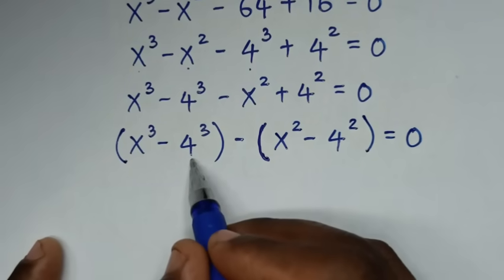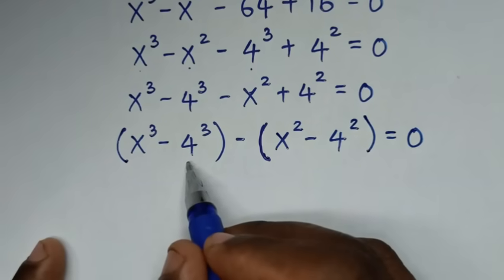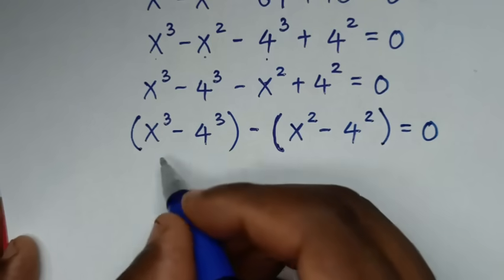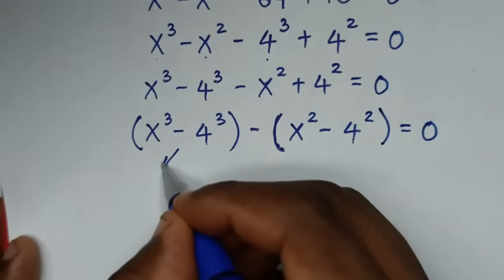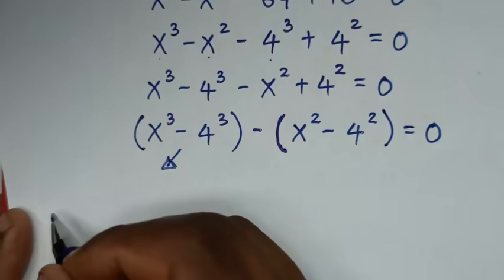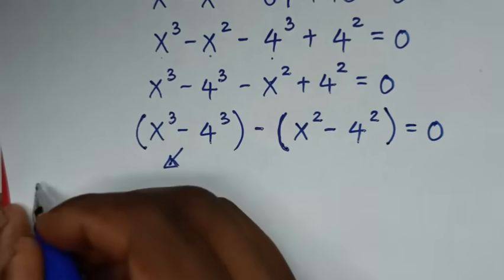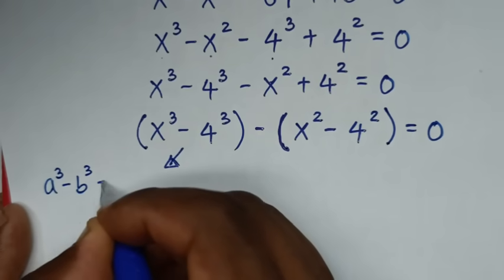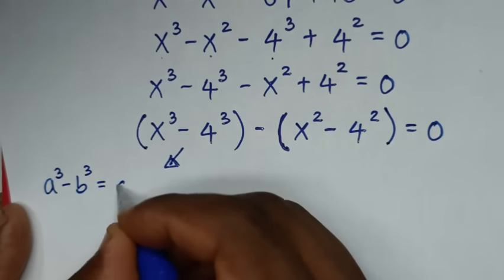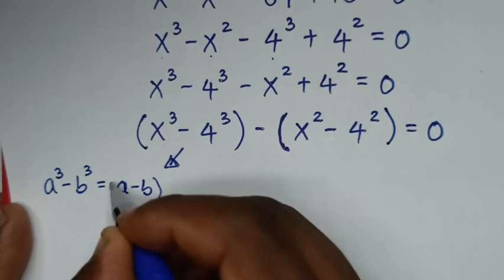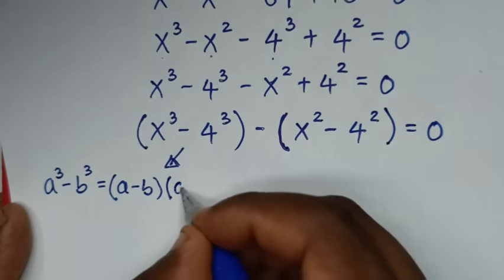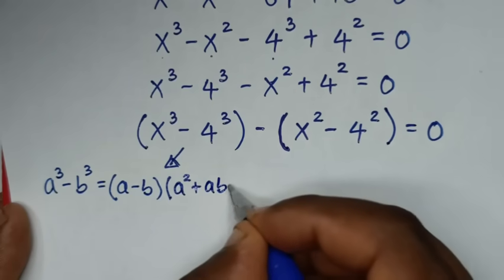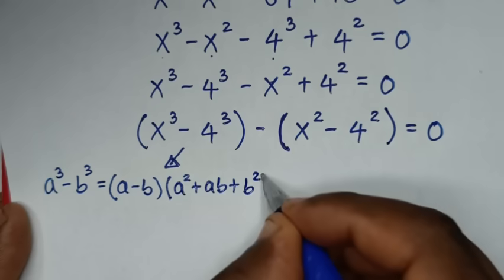The expression x³ minus 4³ is in the form of difference of two cubes, so we'll apply the rule: A³ minus B³ is equal to (A minus B)(A² plus AB plus B²).